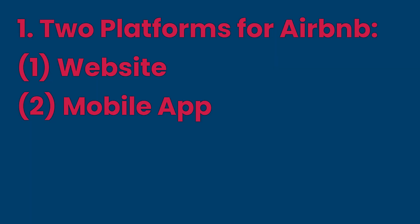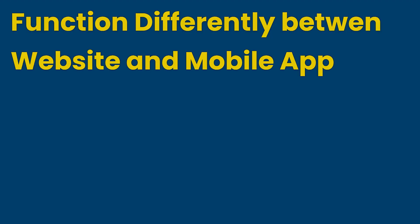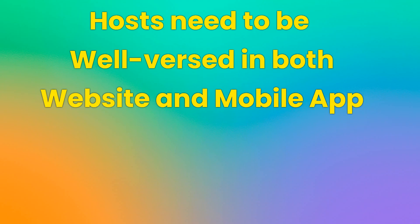Before we discuss the problems and their solutions, it is essential to keep the following points in mind. First, understanding Airbnb's platforms: website versus mobile app. Airbnb operates on two major platforms — its website and its mobile app. Developed by separate teams, the interfaces are distinct and the functionalities may not be the same. Therefore, it is necessary for hosts to be well-versed in both the website and the mobile app.